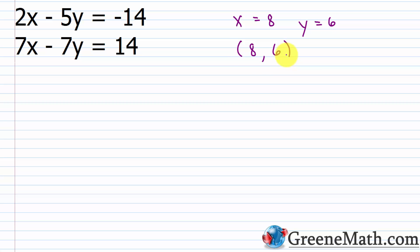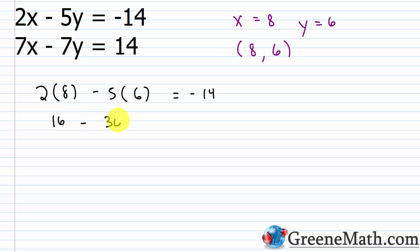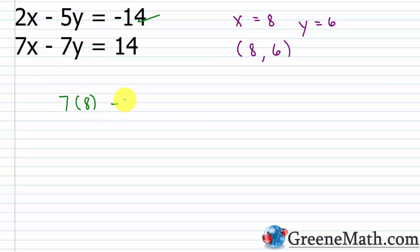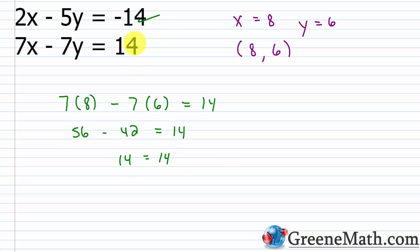Let's verify: plugging into 2x minus 5y equals negative 14 — 2 times 8 is 16, minus 5 times 6 is 30, and 16 minus 30 is negative 14. It checks out. For the second equation, 7 times 8 is 56, minus 7 times 6 is 42, and 56 minus 42 is 14. Negative 14 equals negative 14, and 14 equals 14. Both equations check out.